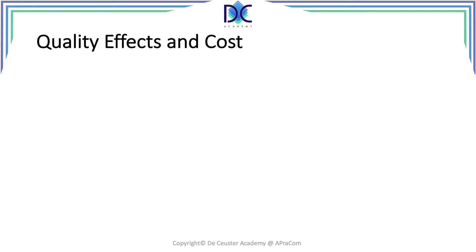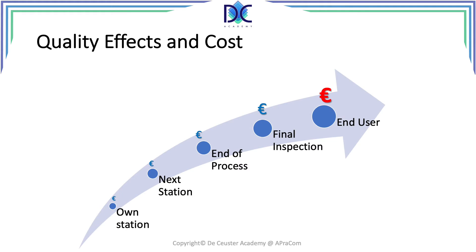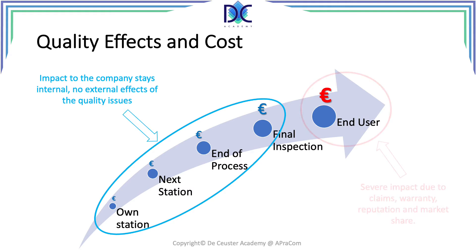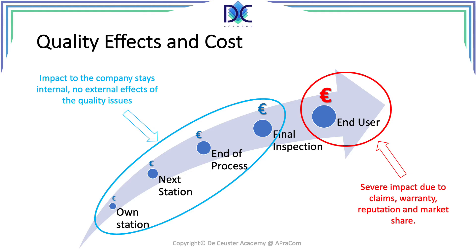Why is quality so important? When we look at quality effects and cost, we see what happens when we don't catch a quality issue at our own station. The farther away from the source — the next station, end of process, final inspection — the cost of that error increases. As long as the error remains within the company it's manageable, but once it gets out it can have a severe impact: claims, warranties, reputation damage, and loss of market share. In some cases, it has bankrupted companies.